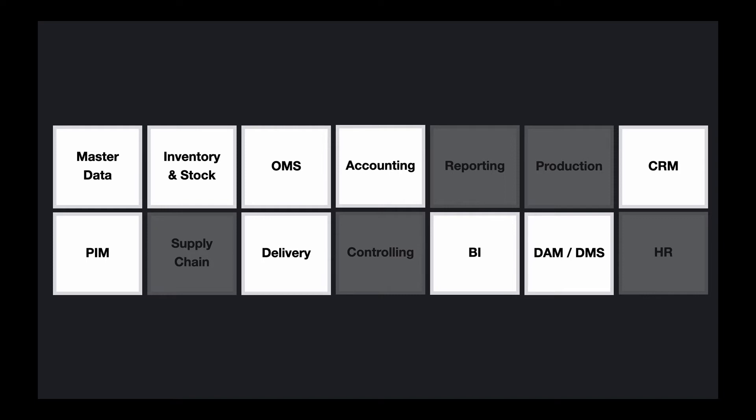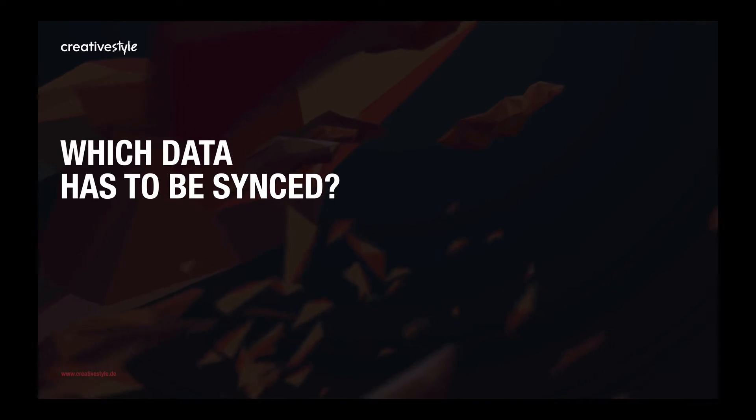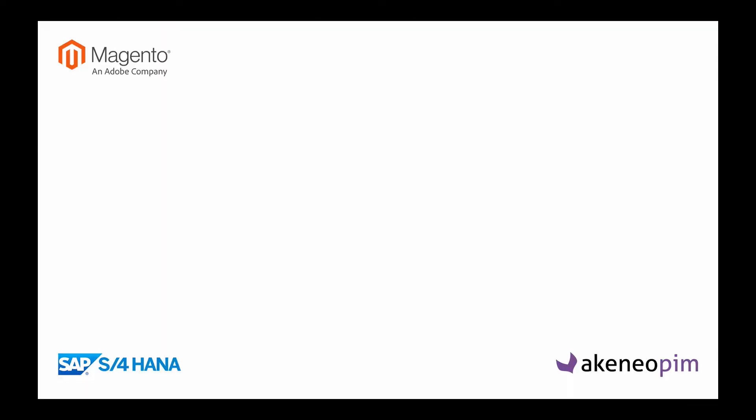Luckily we don't have to integrate all ERP features with Magento, so we have to focus on only some of them. So what data must be synchronized between ERP and Magento? Let's take a look at a classic setup. Suppose we use SAP as an ERP and Akeneo as a PIM. First of all we have to synchronize master data. The master data is usually managed in the ERP system as a centralized system and we want to push this data to Magento — the most important product information like the SKU, the name and the pricing.